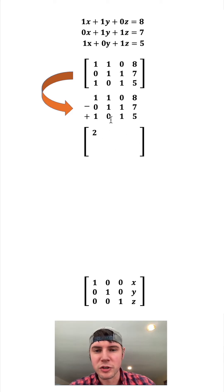1 minus 0 plus 1 is 2. 1 minus 1 is 0, plus 0 is 0. 0 minus 1 is negative 1, plus 1 is 0, and 8 minus 7 is 1, plus 5 is 6. And then we'll just copy these other rows down.